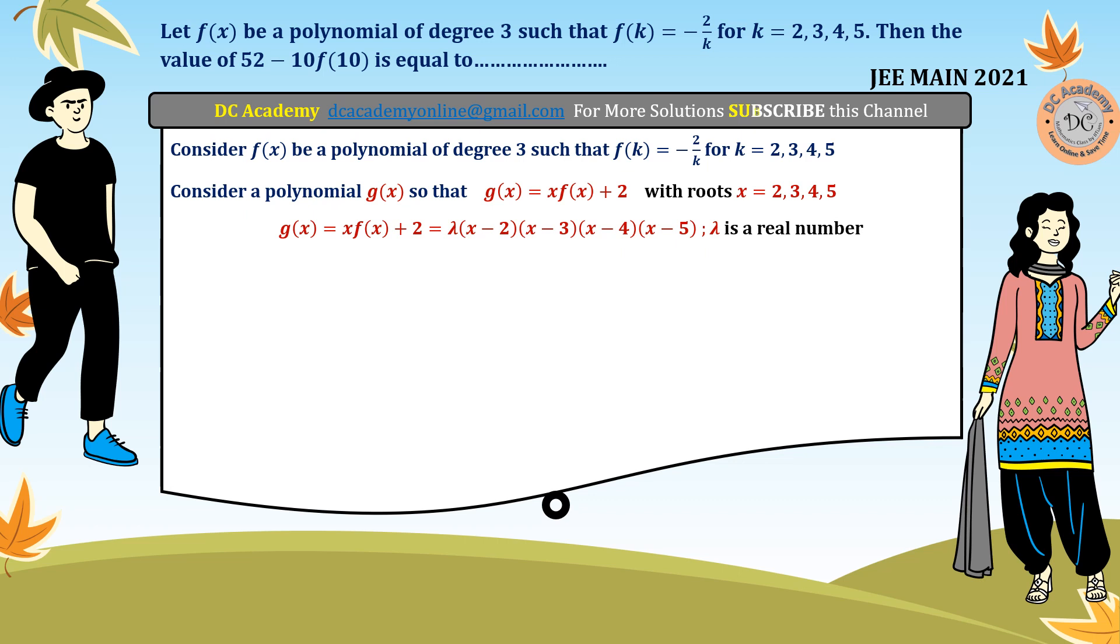Now we just put x is equal to 0 to find out the value of lambda. So if we put x equal to 0, so therefore we can say that g(0) is equal to lambda into 0 minus 2, 0 minus 3, and so on. So therefore we can say that 2 is equal to 120 lambda, hence lambda equal to 1 by 60, and thus the polynomial g(x) will be obtained.